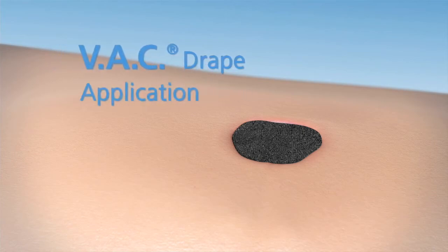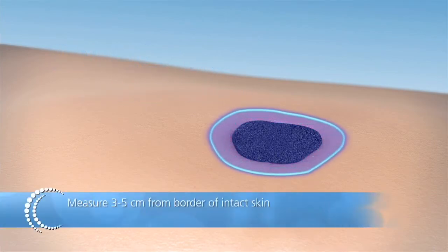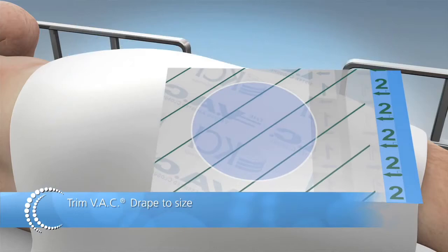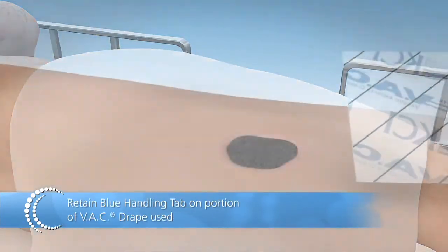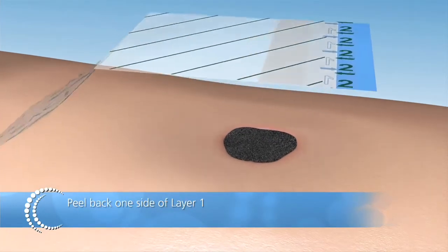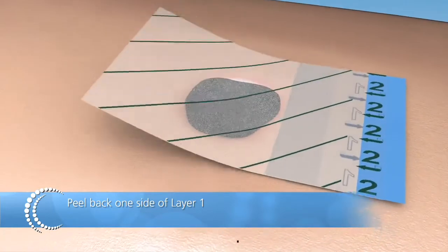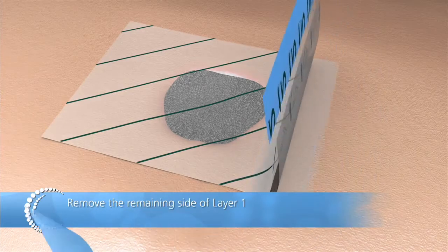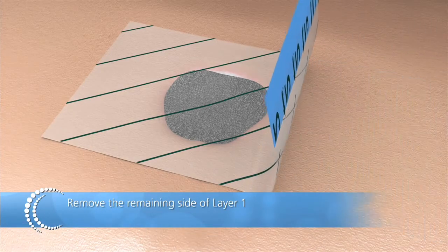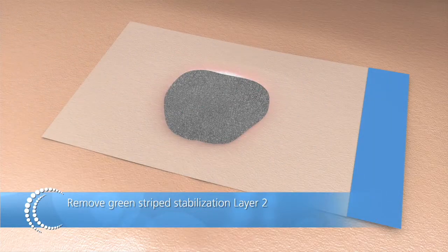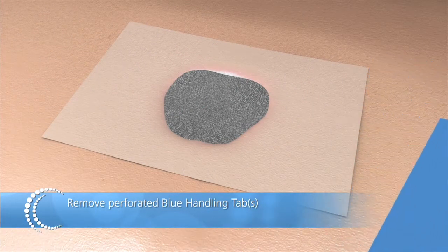VAC drape application. Measure 3-5 cm from the border of intact skin. Trim VAC drape to size. Retain blue handling tab on the portion of VAC drape used. Peel back one side of layer 1. Place adhesive side down over wound. Remove the remaining side of layer 1. Remove green striped stabilization layer 2. Remove perforated blue handling tabs.